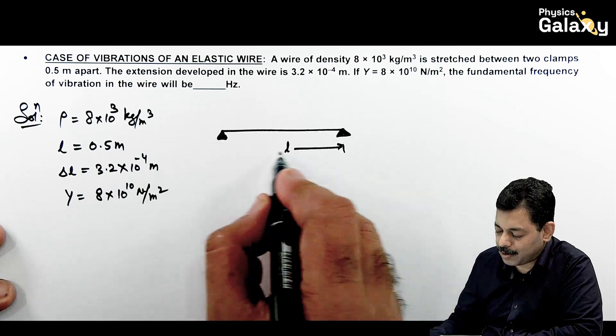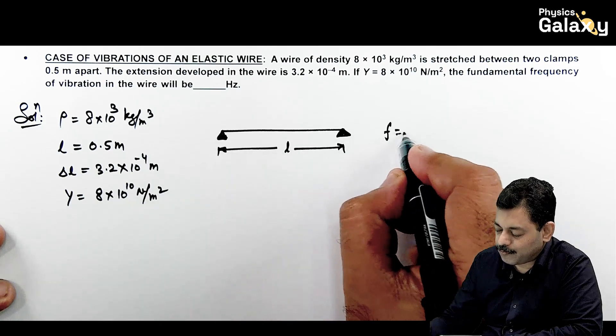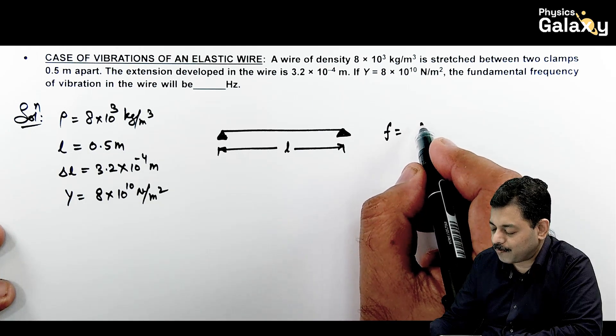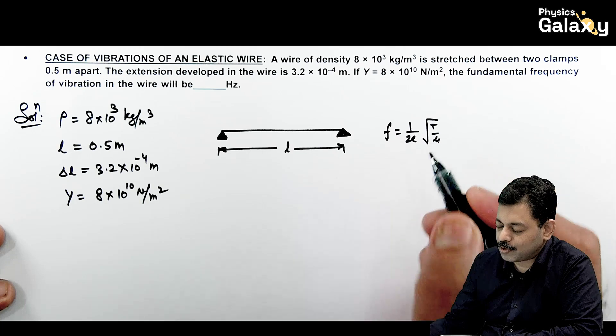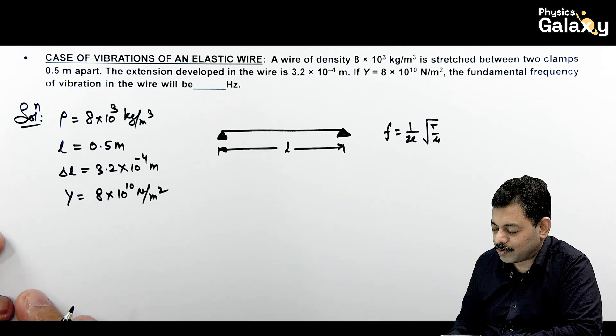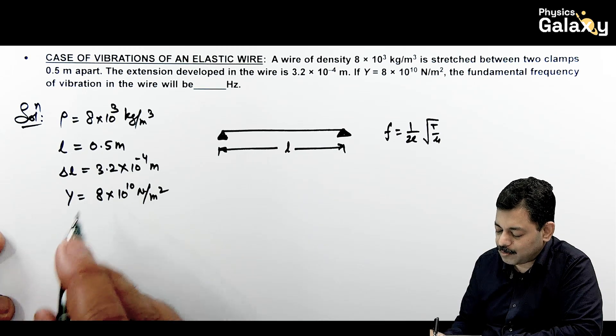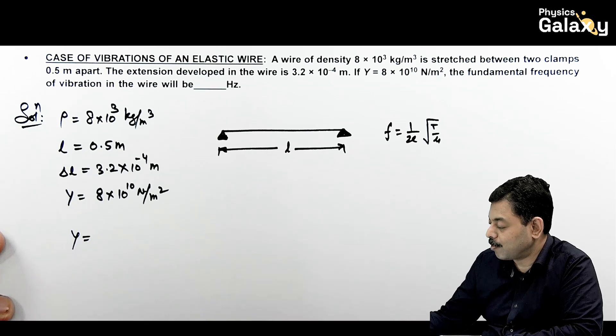Fundamental frequency of oscillation dekhna hai. Jab bhi two clamps ke beech mein wire stretched hote hai, length l hai, we know well its fundamental frequency is written as v by 2l, or we can write as 1 by 2l root of T by mu. This is what we consider as fundamental frequency. In this case, Young modulus, same relation we just did, I'll show you that relation again.